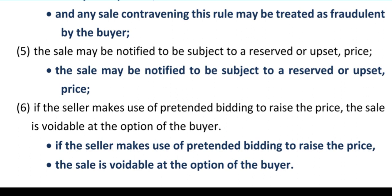Next subsection: If the seller makes use of pretended bidding to raise the price, the sale is voidable at the option of the buyer. Pretended bidding मतलब — seller अपनी चीज़ को ज़्यादा कीमत दिलाने के लिए falsely दूसरे buyers को बिठाता है और price raise करने के लिए कहता है। इससे दूसरे buyer के साथ injustice होता है — उस buyer का contract voidable है at the option of the buyer। यह Section 64 में mention है — 6 subsections हैं इस section में।